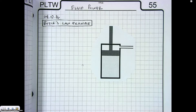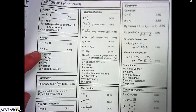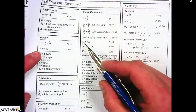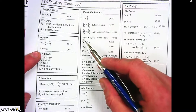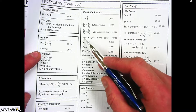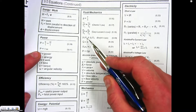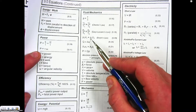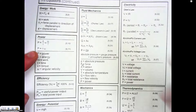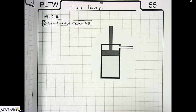We're going to go over an example of Boyle's Law. If you look at your formula sheet, Boyle's Law tells us that the pressure before times the volume before is equal to the pressure after times the volume after. So those two things are directly related.